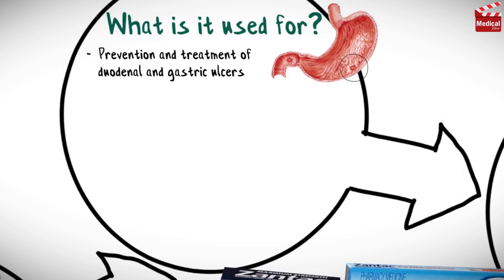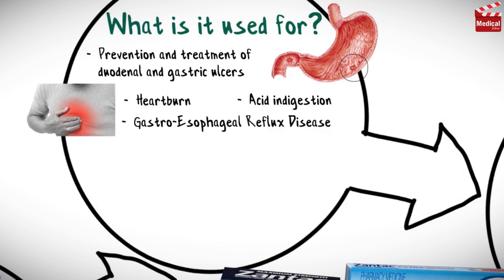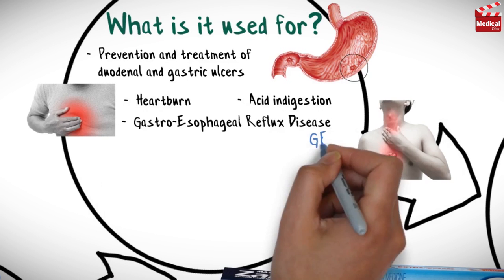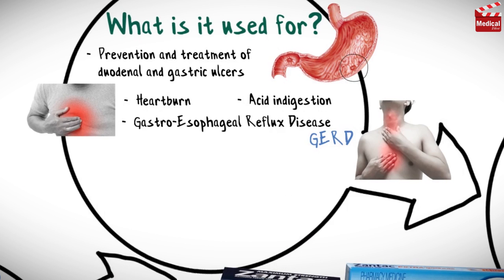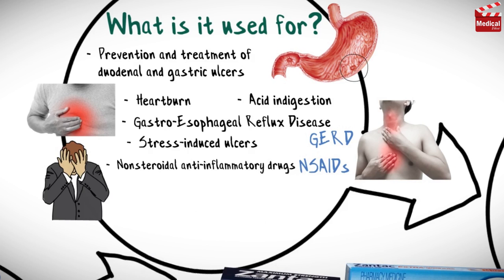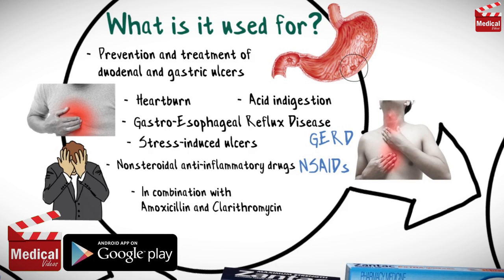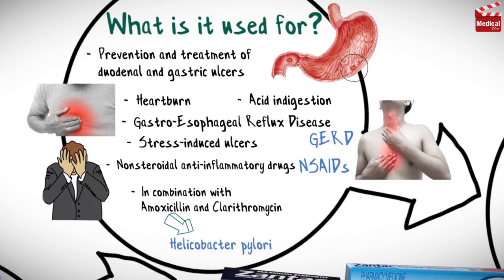Ranitidine is used in the prevention and treatment of duodenal and gastric ulcers, heartburn, acid indigestion, and gastroesophageal reflux disease (GERD). It is also used for stress-induced ulcers and ulcers induced by non-steroidal anti-inflammatory drugs, and in combination with amoxicillin and clarithromycin in the treatment of Helicobacter pylori.